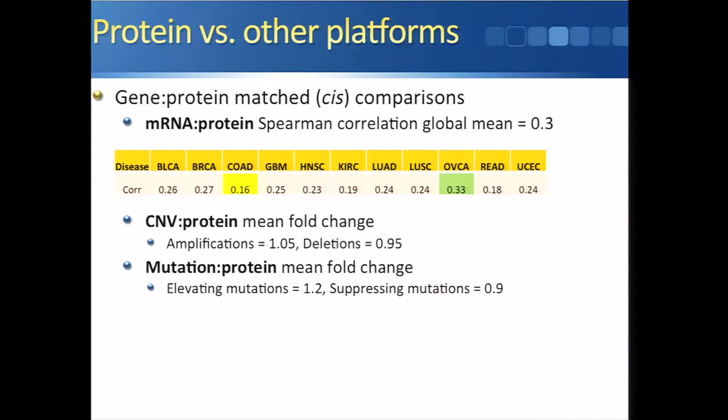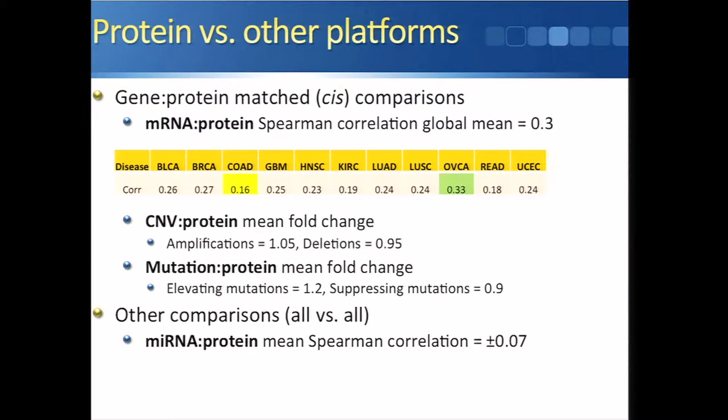For mutation versus protein, we saw that on average elevating mutations — those resulting in higher expression levels — increase protein expression levels by about 20%, whereas suppressive mutations decrease protein levels by about 10%. Those numbers are larger than for copy number, and we think that's because there are fewer passenger mutations than passenger copy number variations, which may explain the discrepancy.